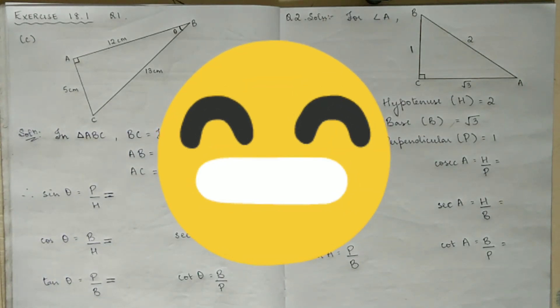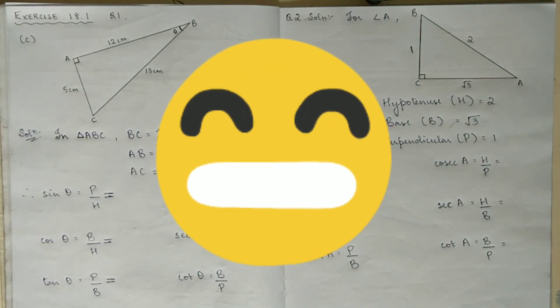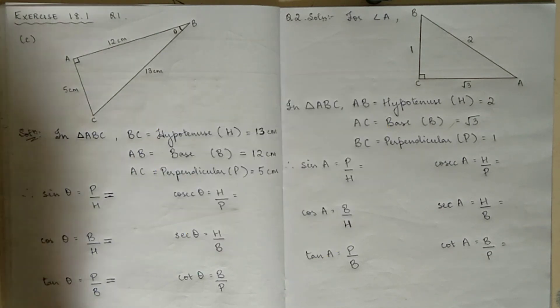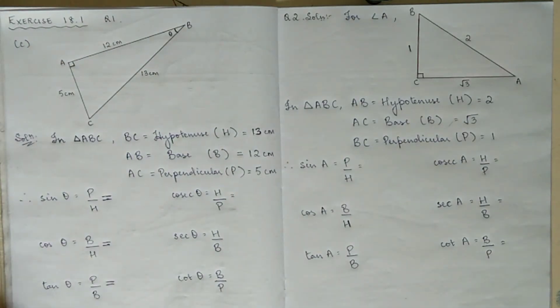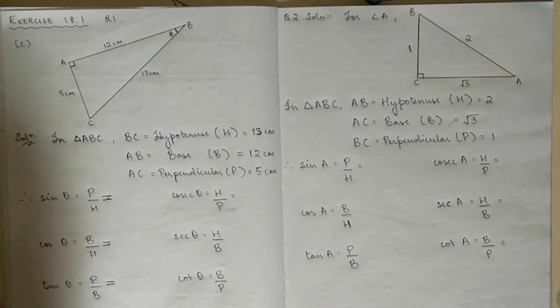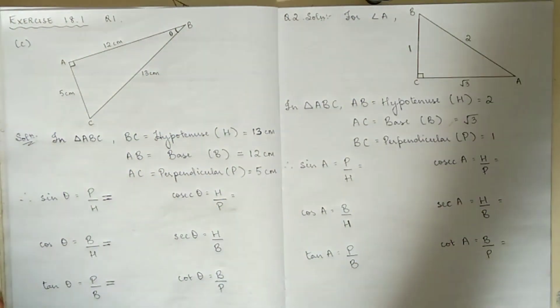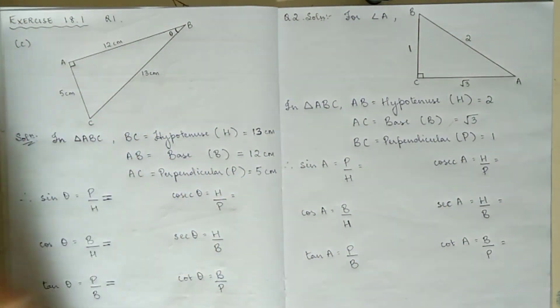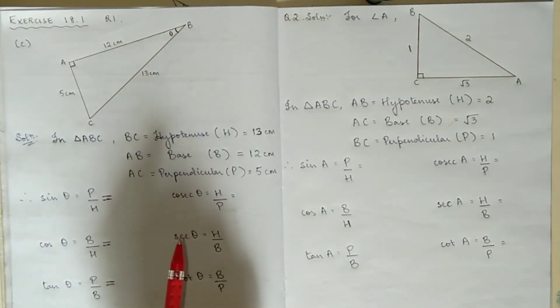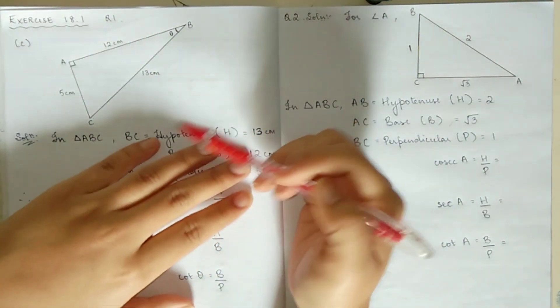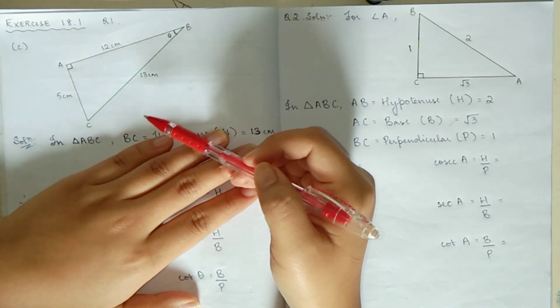Hello everyone, welcome back. Today I will be doing exercise 18.1 question number 1 sub number C, and you can do sub number A, B, and D on your own. Now in the last video I explained the meaning of the three sides which are hypotenuse, base, and perpendicular. Today we are going to find that on our own.